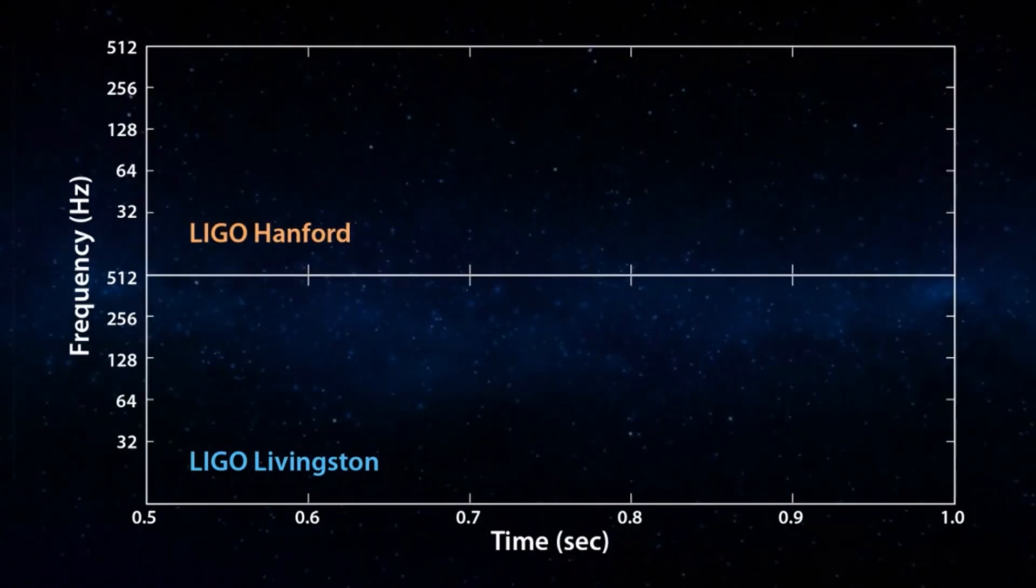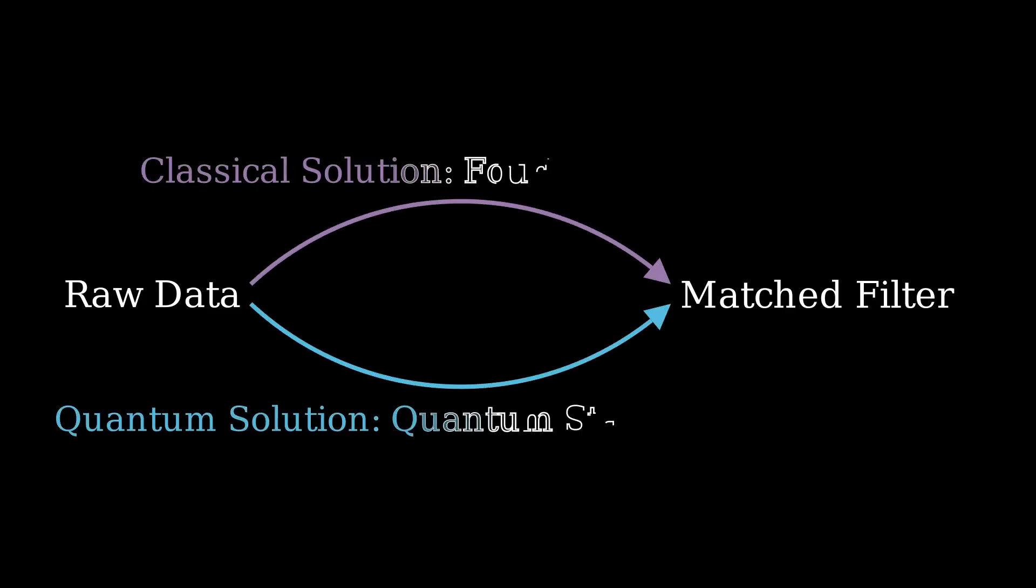Okay, but how can quantum computers help here? Well, it turns out that quantum computers can be useful for matched filtering. The quantum algorithm matches classical performance while using a completely different method. This method gets its speed up using quantum state preparation.